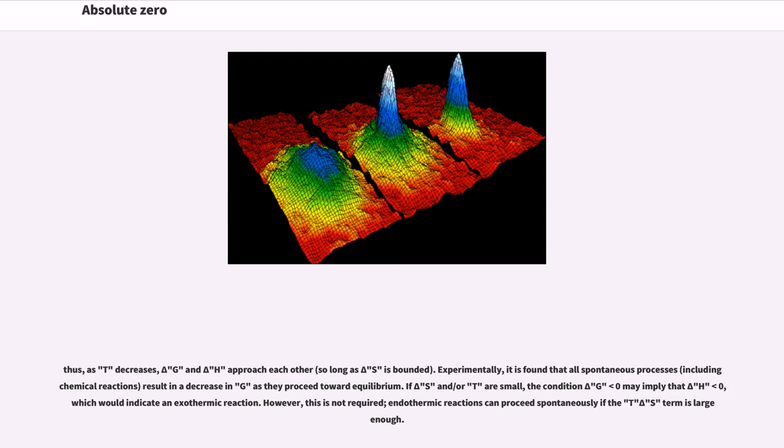Experimentally, it is found that all spontaneous processes, including chemical reactions, result in a decrease in G as they proceed toward equilibrium. If delta S and/or T are small, the condition delta G less than zero may imply that delta H less than zero, which would indicate an exothermic reaction. However, this is not required, and endothermic reactions can proceed spontaneously if the T delta S term is large enough.